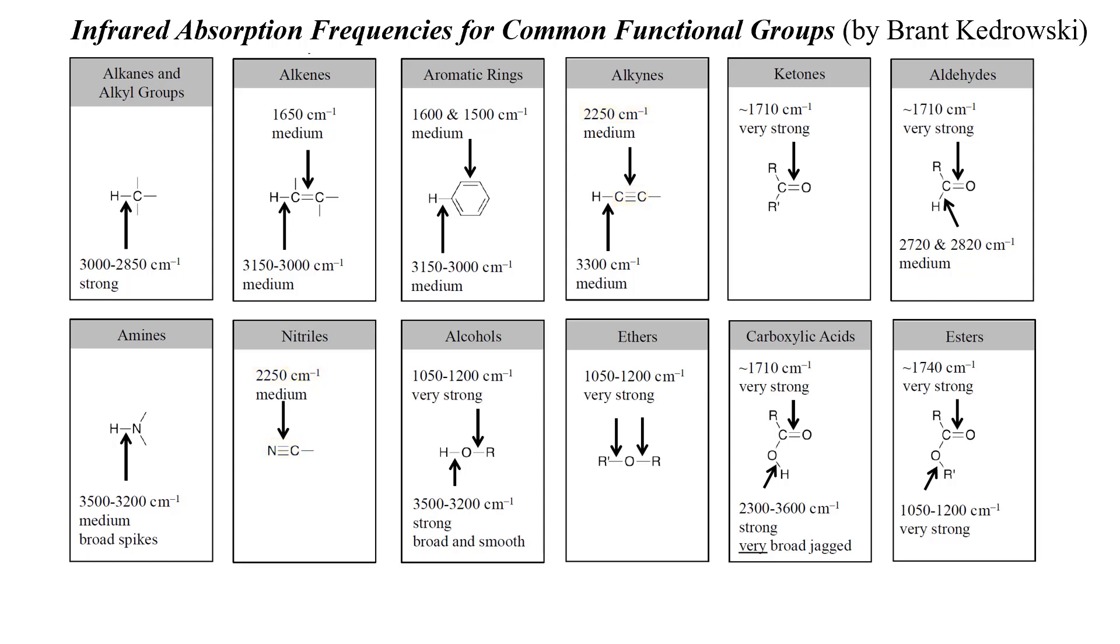In addition to the frequencies of peaks here, I've also shown typical strengths of peaks. This would be medium, strong, or very strong. This indicates the typical size of a peak. I've also listed some details about peak morphology in some cases. You'll see some of these that are listed as broad and smooth, broad with spikes, very broad and jagged. These details can be useful for distinguishing N-H and O-H groups of different types.